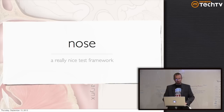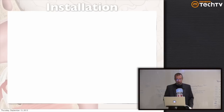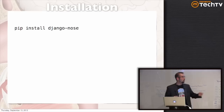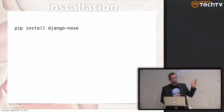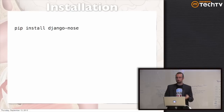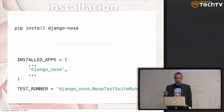Let's talk about Nose and how you apply it to Django. Here's how you install it — you just pip install django-nose, which is a shim that implements a Django test runner and then calls out to Nose. Nose itself is a requirement of django-nose, so it gets pulled down automatically. Then all that's left is to set up your settings: add django-nose to your installed apps and set the test runner to django-nose's test runner.